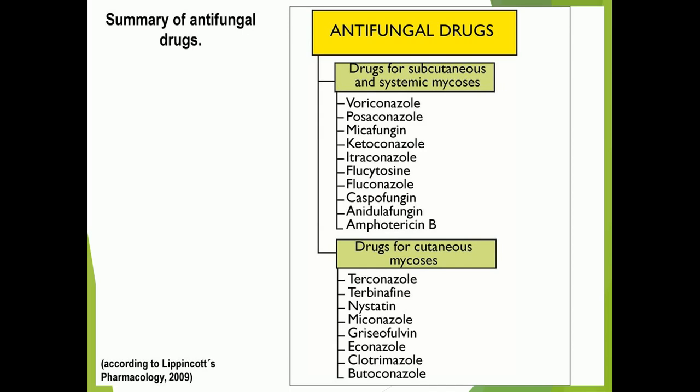This is a very short summary and these contents have been taken from the Lippincott Pharmacology. Antifungal drugs can be divided into two groups. The first one is drugs for subcutaneous and systemic mycosis. These include voriconazoles, posaconazoles, micafungins, ketoconazole, itraconazole, flucytosine, fluconazole, caspofungins, and anidulafungins.